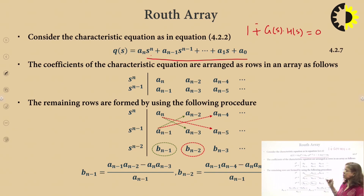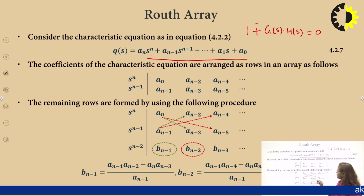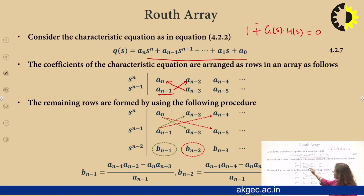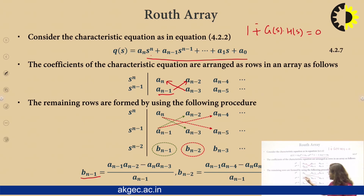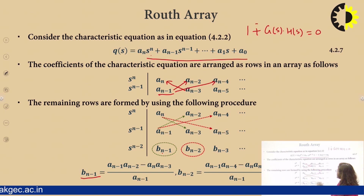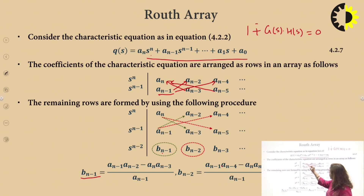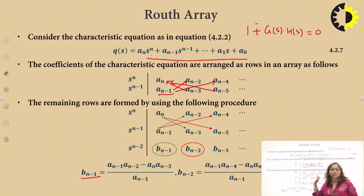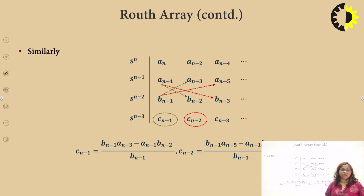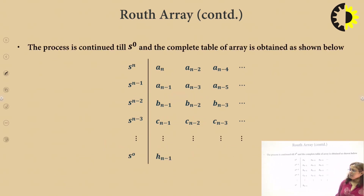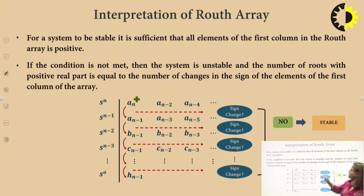For the remaining rows we form elements down to s^0. The next row element is computed as: (aₙ₋₁ · aₙ₋₂ − aₙ · aₙ₋₃) / aₙ₋₁, giving bₙ₋₁. Similarly the second element is (aₙ₋₁ · aₙ₋₄ − aₙ · aₙ₋₅) / aₙ₋₁. In this way we form the entire Routh array and calculate the coefficients for all rows.